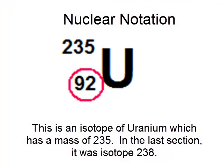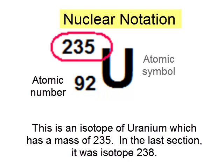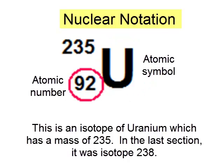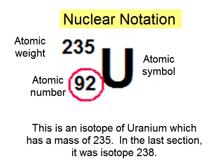Nuclei are described by a notation which is shown here. The atomic number is actually redundant because the atomic symbol is given. The atomic weight can vary for different isotopes.